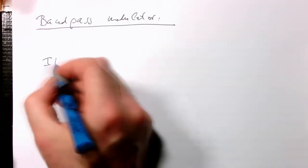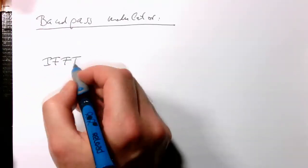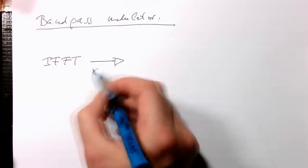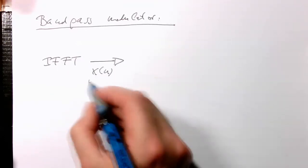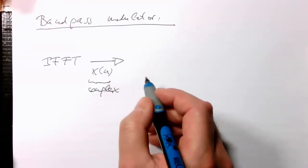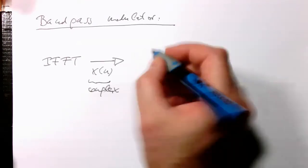If we have our IFFT, this generates us x of n which are complex, and then we use our bandpass modulator.